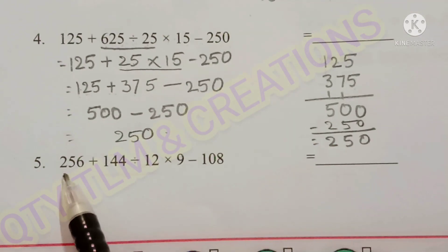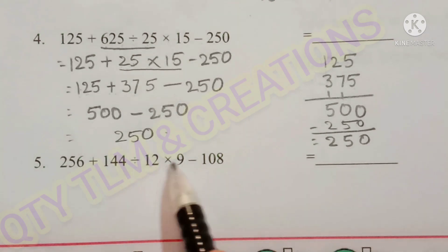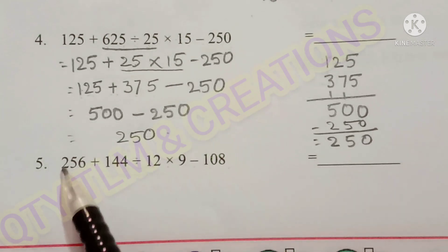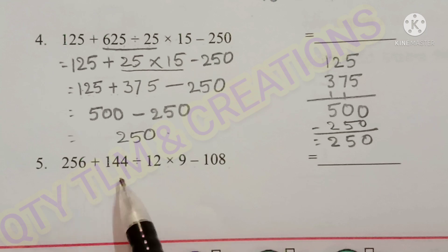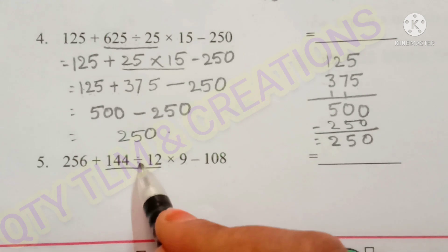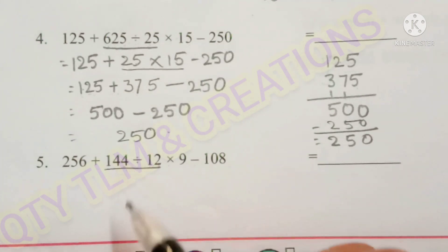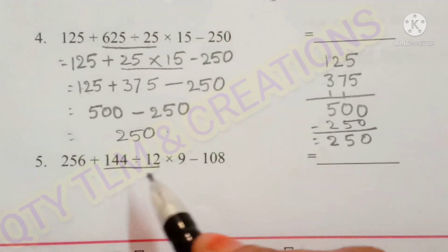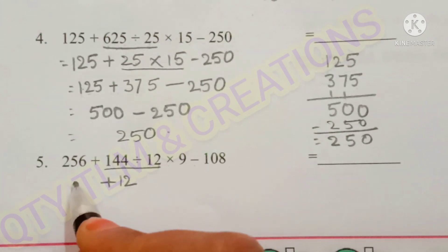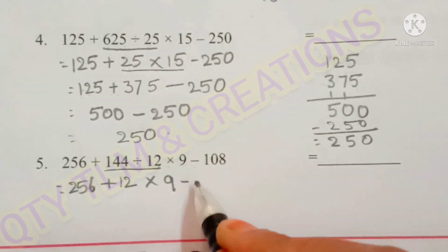Next question is 256 plus 144 divided by 12 into 9 minus 108. So this sum also has 4 operations. So we perform the division first. So division, 144 divided by 12. So 12 divides 144 for 12 times. 12 times 12 is 144. So here 12 plus 12, so 256 into 9 minus 108.